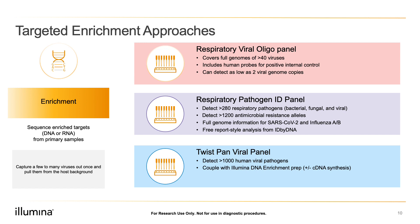Many labs are using one of the three available probe pools I'm showing you today to target their viruses of interest. Keep in mind that these pools target many viruses, and while you may only be interested in one or two of their targets, they end up being cost-effective compared to a custom synthesis, and there's no harm in having the superfluous probes in the pool. The Respiratory Viral Oligopanel, or RVOP, from Illumina targets the full genome of more than 40 viruses and includes targets for a positive human control. The viruses are all known respiratory viruses in humans, and the panel provides incredible sensitivity by being targeted and covering the complete genome of each virus.